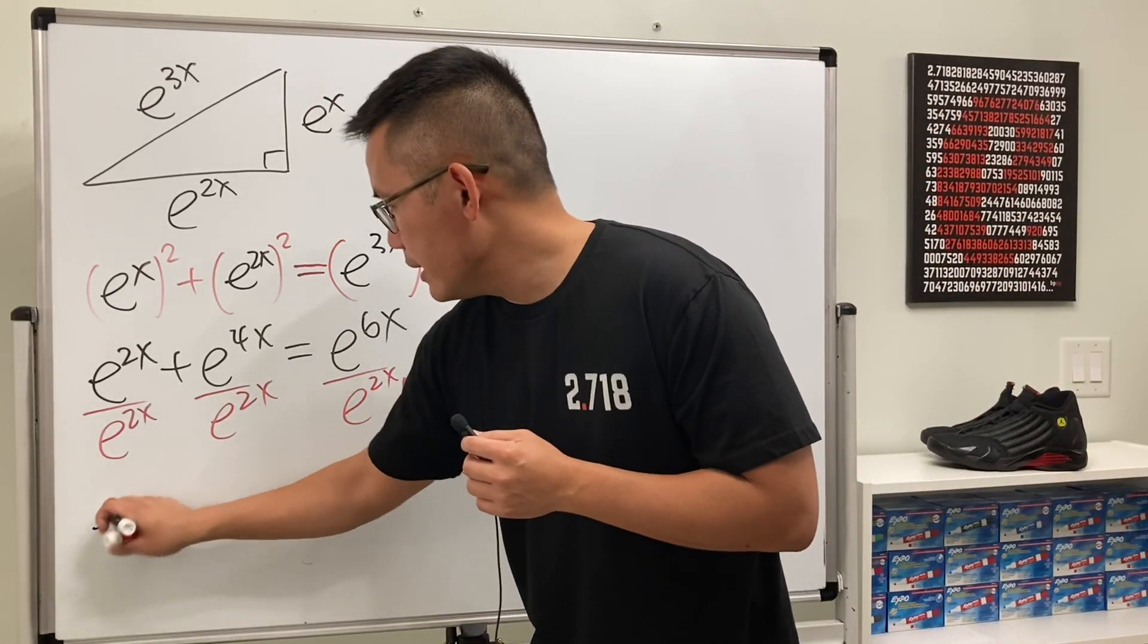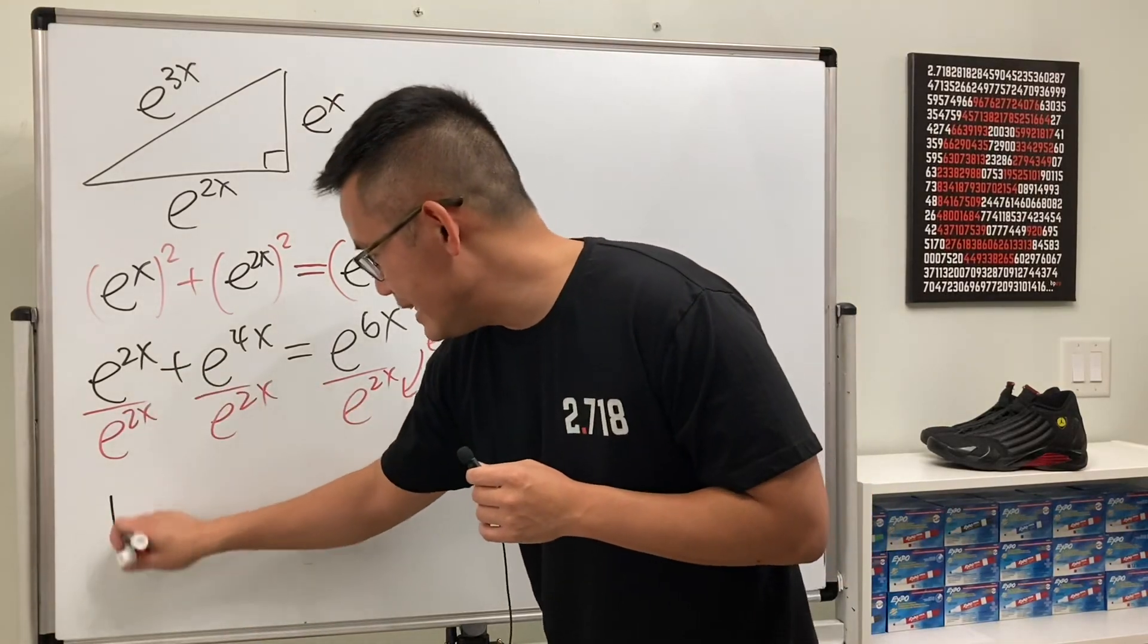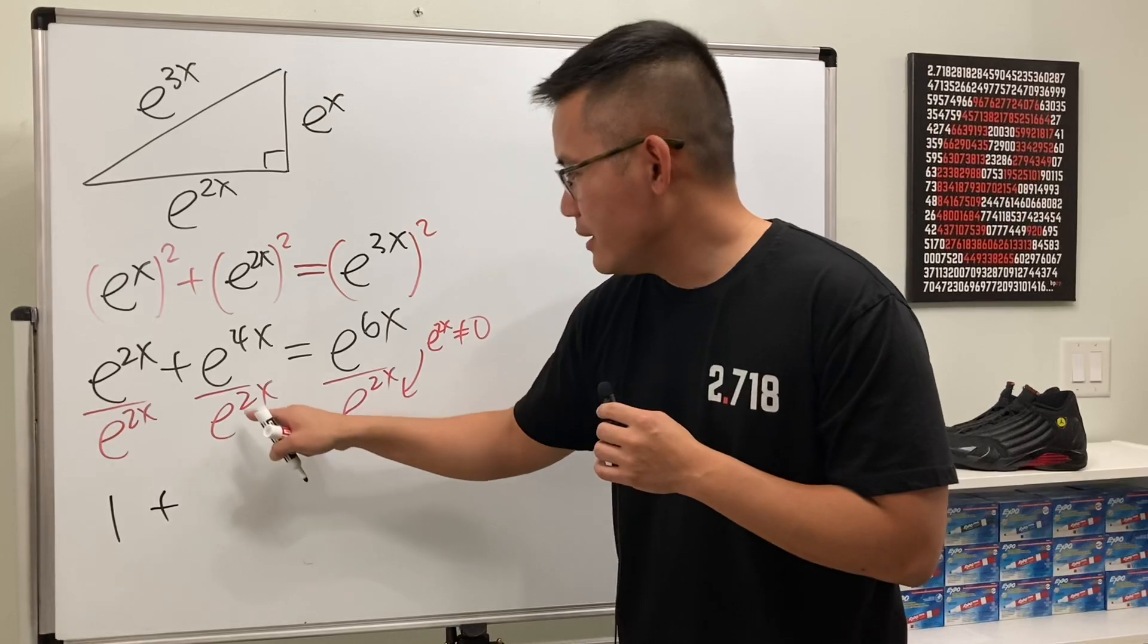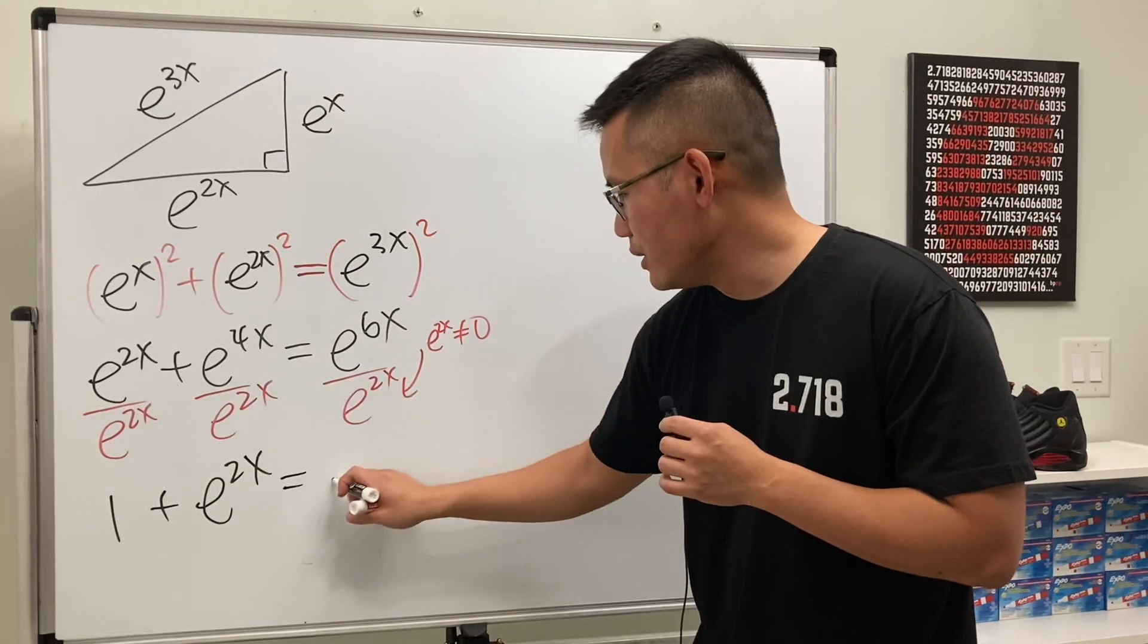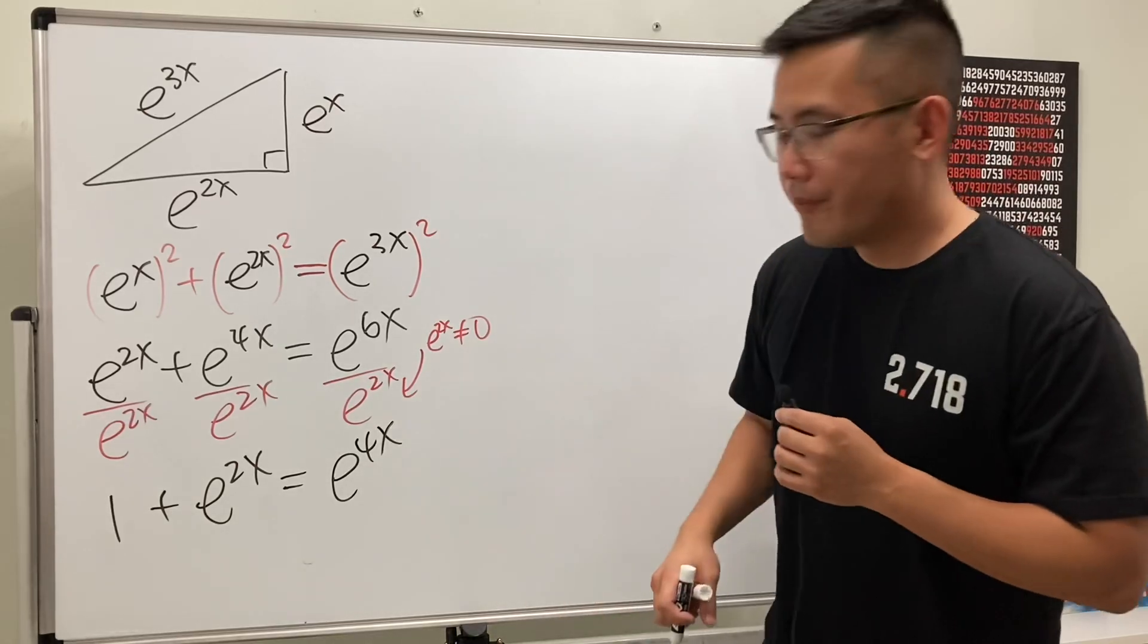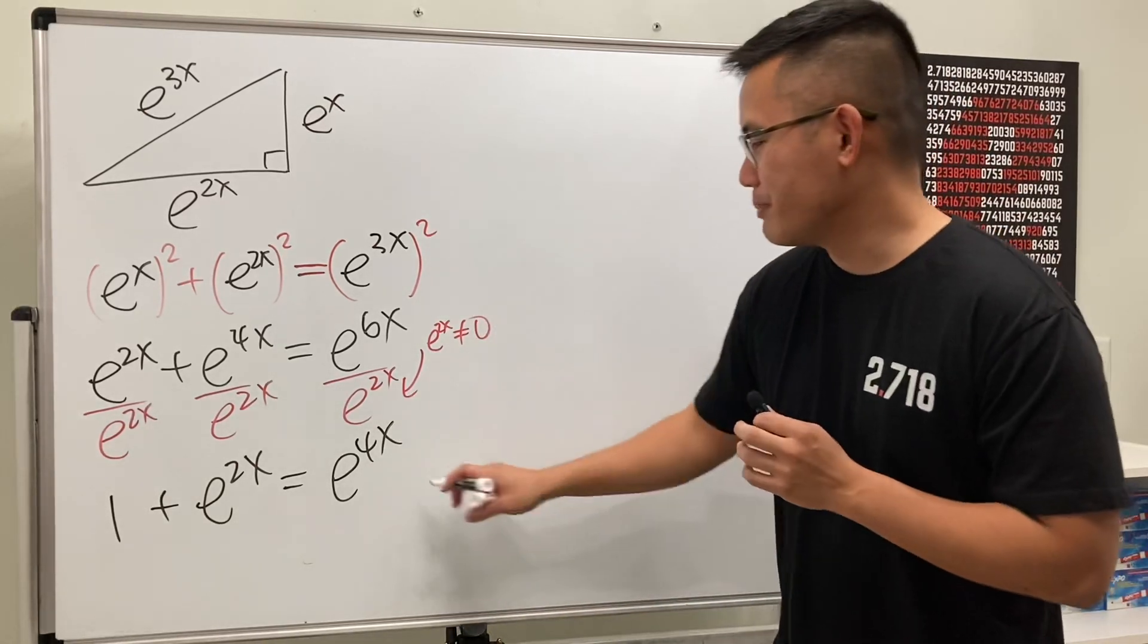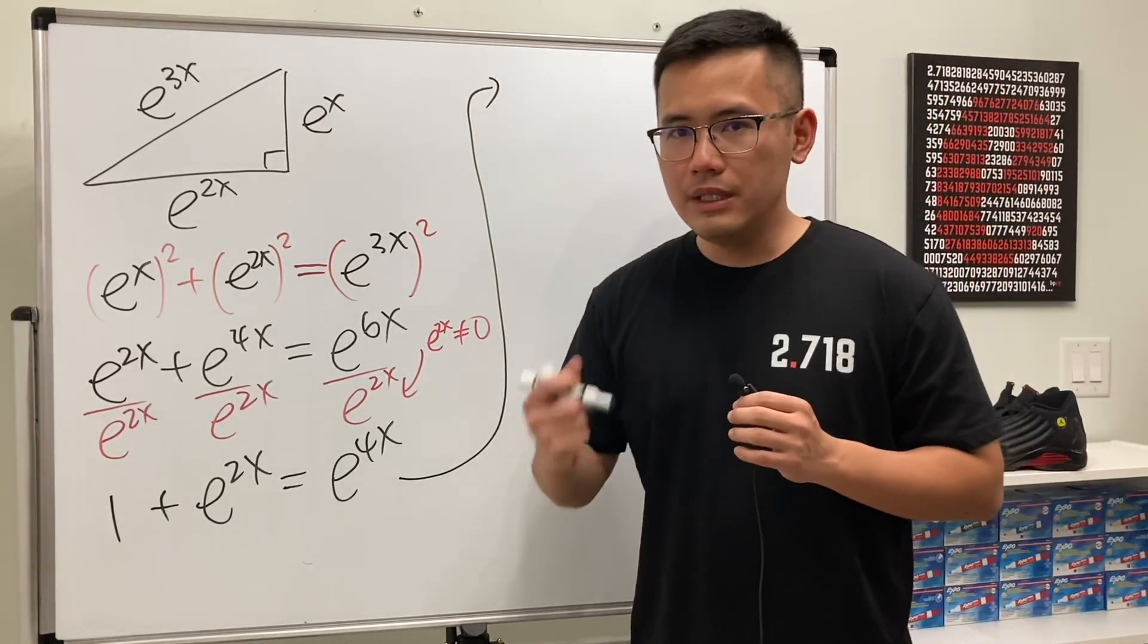So we can just look at the equation as e to the—well in Chinese it's also e but this right here is actually e, I mean one—plus this right here is e to the 2x, and then this right here is equal to e to the 4x. So it's better, huh? But let me tell you, this right here is actually great because now we actually have a quadratic equation in terms of e to the 2x.